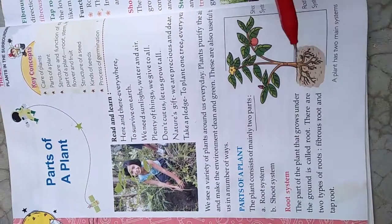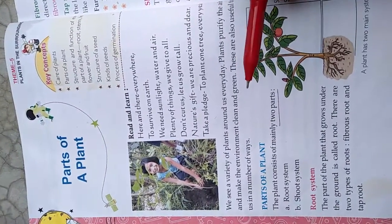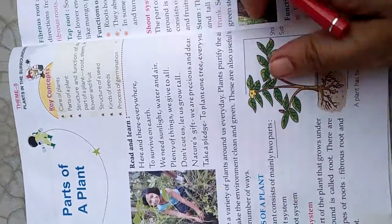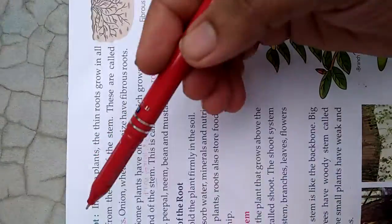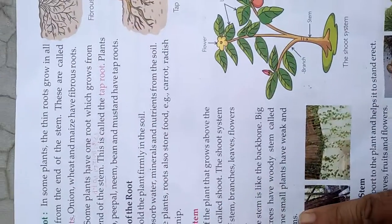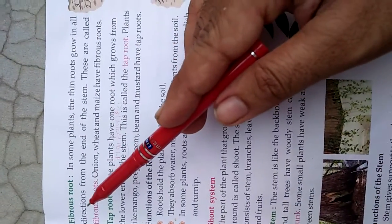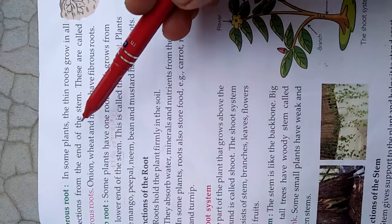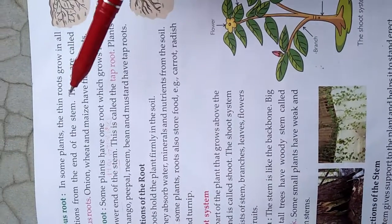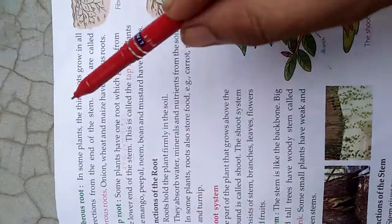There are two types of roots: the first is fibrous root and the second is tap root. In fibrous roots, thin roots grow in all directions from the end of the stem.